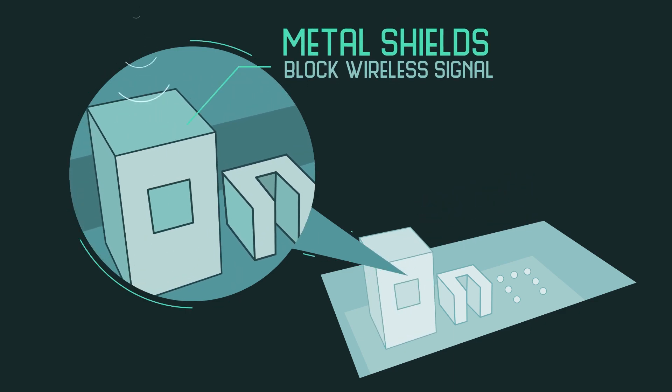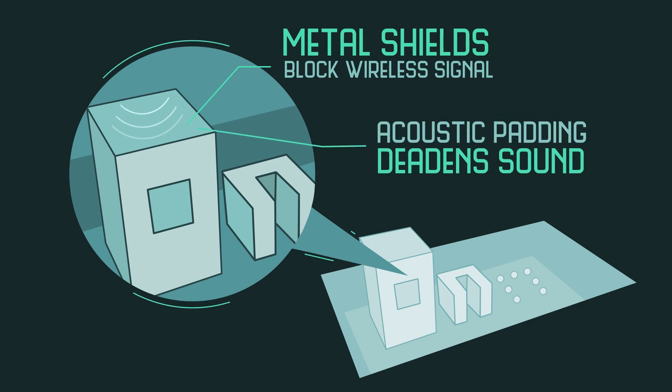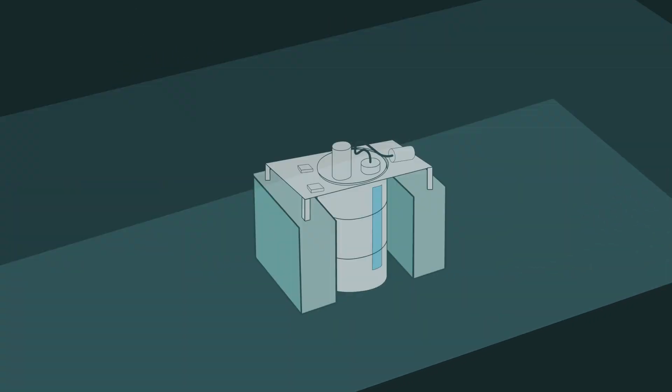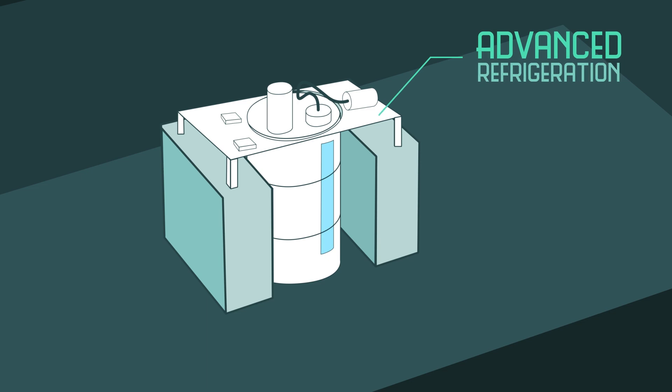Metal shielding blocks wireless signal and acoustic padding deadens sound. And our experiments can be made colder than deep space.